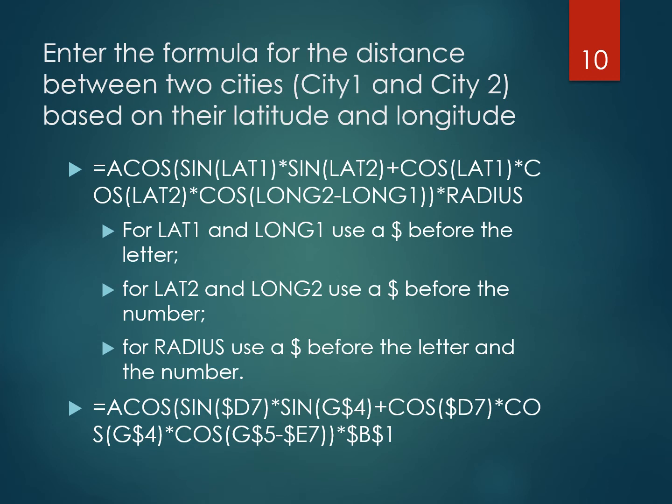There are several formulas for calculating the distance between two points on a sphere, and believe it or not, this is one of the simpler ones. The calculation uses the ACOS — the arc cosine or inverse cosine in Excel — open parenthesis, then sine of latitude 1 times sine of latitude 2, plus cosine of latitude 1 times cosine of latitude 2 times cosine of (longitude 2 minus longitude 1), close parenthesis, then multiplied by the radius.